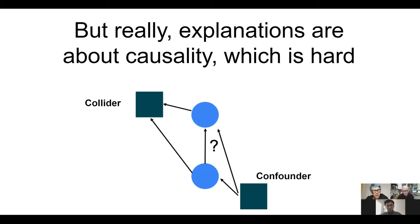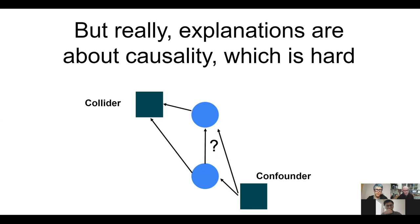Why is causal understanding so hard? If we're interested in how one variable affects another, there are other variables — confounders — that affect both. Many AI people believe that with enough data we can correct for confounders. The problem is there are also collider variables affected by both variables of interest. Correcting for colliders makes things worse. In reality, many confounders are simultaneously colliders, making causality very difficult.